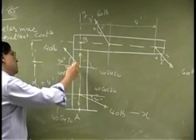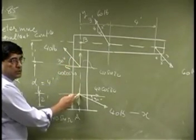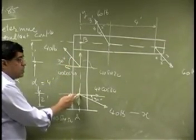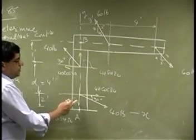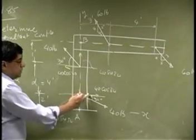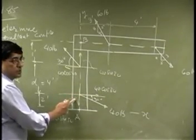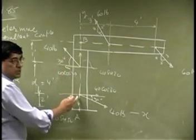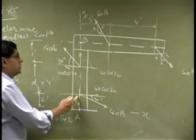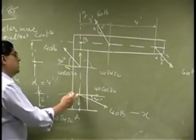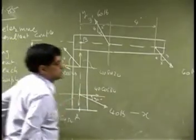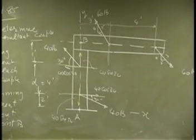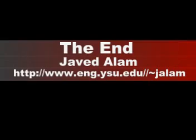Choosing this point and summing the moments: the two components at that point will give a zero moment, and this one will also give a zero moment since it passes right through the point. So all that's left is 40 cosine 30. Let's go back to the first question.